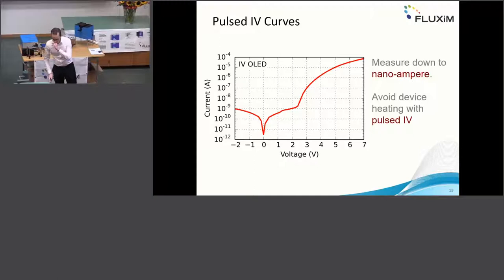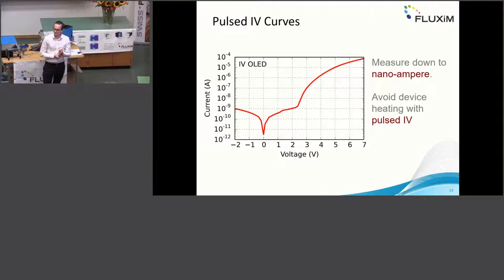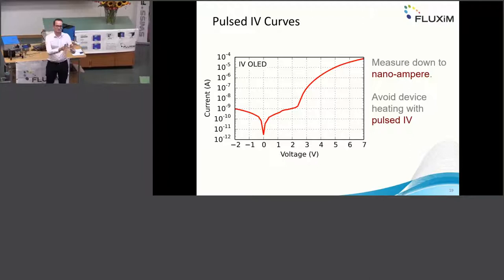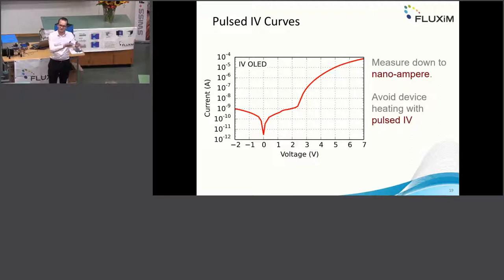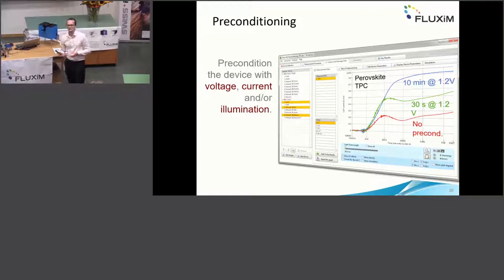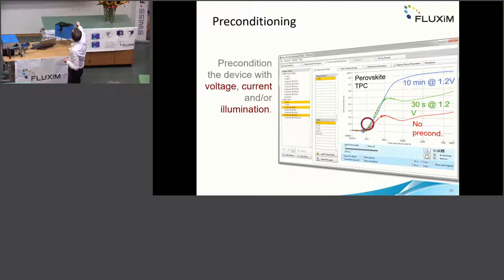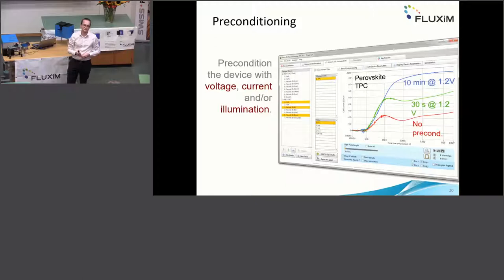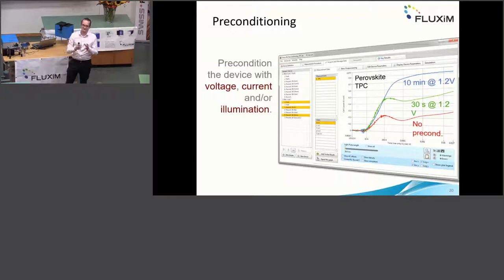For perovskite solar cells, what Brian O'Regan and Philip Calado call 'tabbing', we call preconditioning. We first apply a certain voltage or light intensity to the perovskite cell for a set time to precondition the ions, then quickly do an experiment. For example, in a transient photocurrent onset, without preconditioning the curve looks slow, but the longer you precondition, the faster the current rise. This is important because when starting characterization you want the cell in a defined state — preconditioning tells you where the ions are.